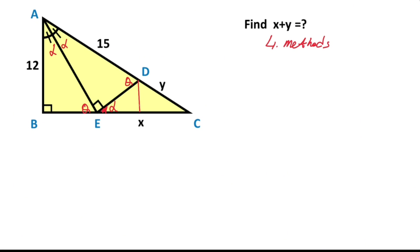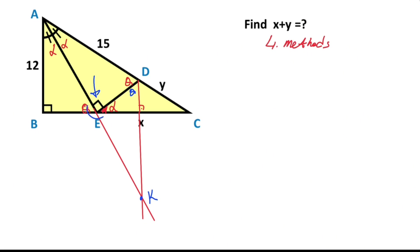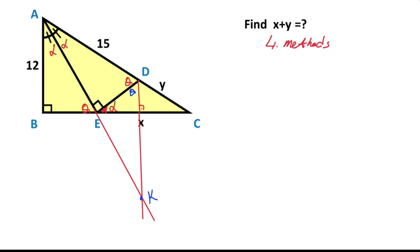After that, draw a perpendicular line like this, extend here, and extend corner E like this. Let's call here point K. If you focus on this triangle, here must be equal theta. Notice that there is an angle bisector line here and the right angle is 90 degrees.